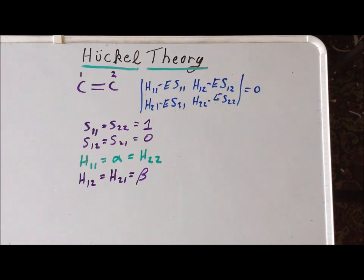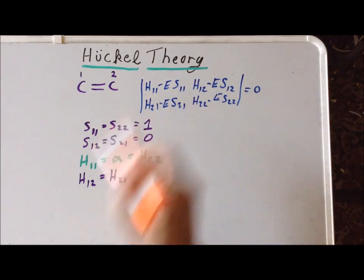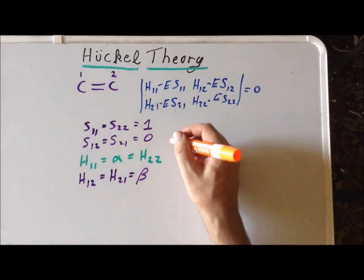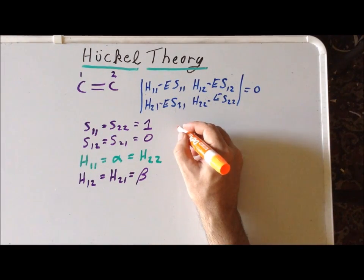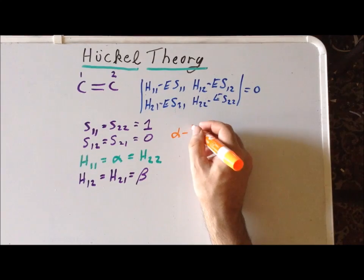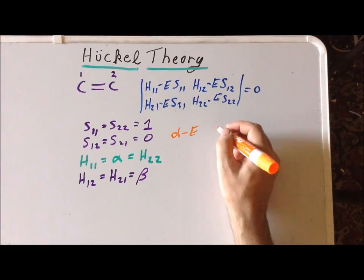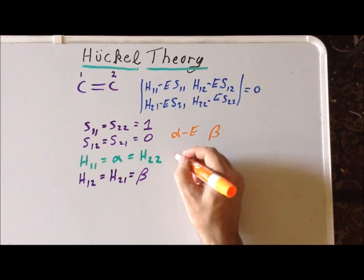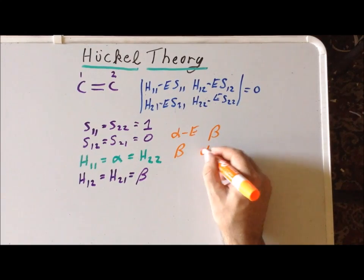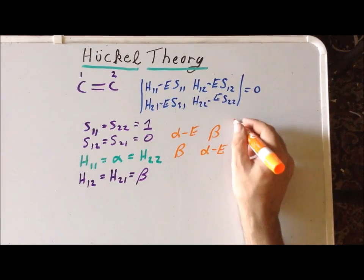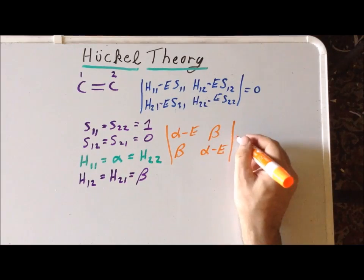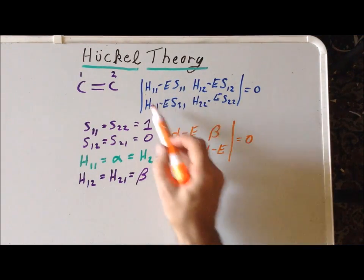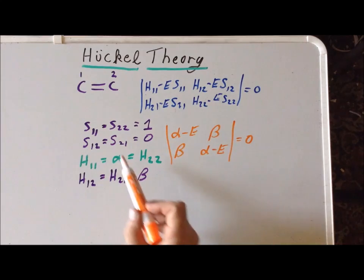So what does that give us in the case of Hückel theory? That simplifies our secular determinant to the following expression. We have alpha minus the energy, beta, beta, alpha minus the energy, equals 0. That is what we get if we apply these Hückel approximations.